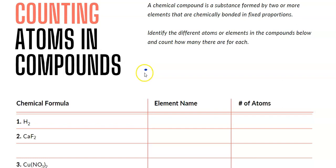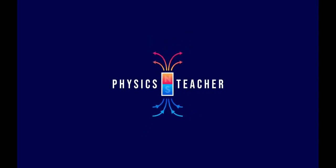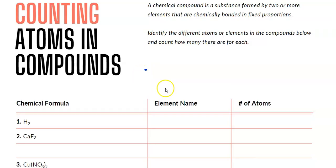Hello and welcome to Physics Teacher. In this tutorial for grade 10 science, I'm going to teach you how to balance chemical equations. So let's get started. To properly balance chemical equations, we need to make sure we know how to count atoms inside of compounds. So let's go over the basics of this.